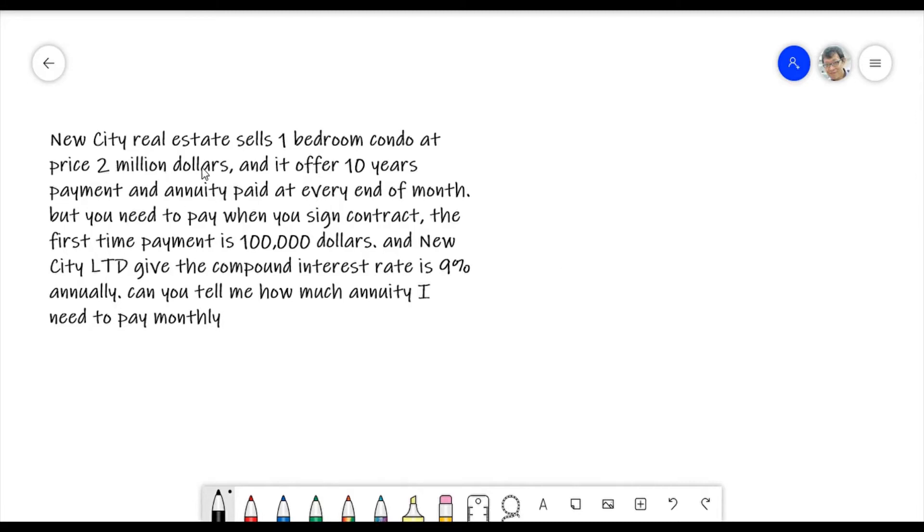Then the second example that I said I will do together with you, so bear with me, I will calculate it at my backend, so it will be spent sometimes, definitely. But the way is same. Let's see what's the scenario. It's a new city real estate, this is a real estate, the condo built company, and sell one bedroom condo. That's what I need. Yes, I'm single, and I'm married, and I want to buy a one bedroom condo.